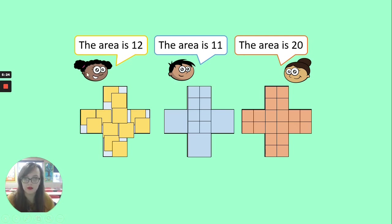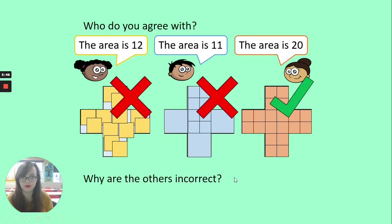It's not the first girl, Whitney. Her squares are all over the place. And it's not this boy either, because he's used different sizes of squares to measure it. And that's not fair. That's not equal. But this last girl, she's used squares of the same size to measure her area. And so it's her area that would be correct. The area is 20 squares.